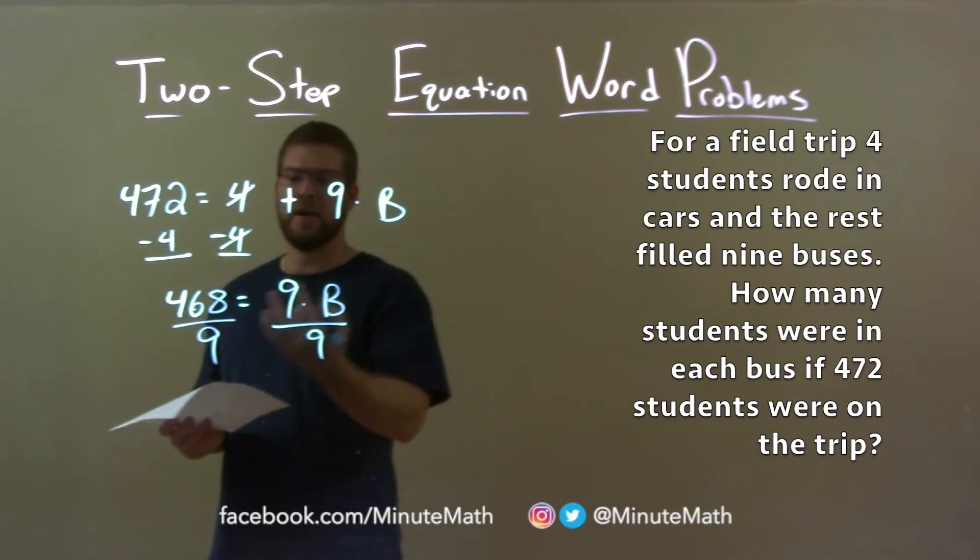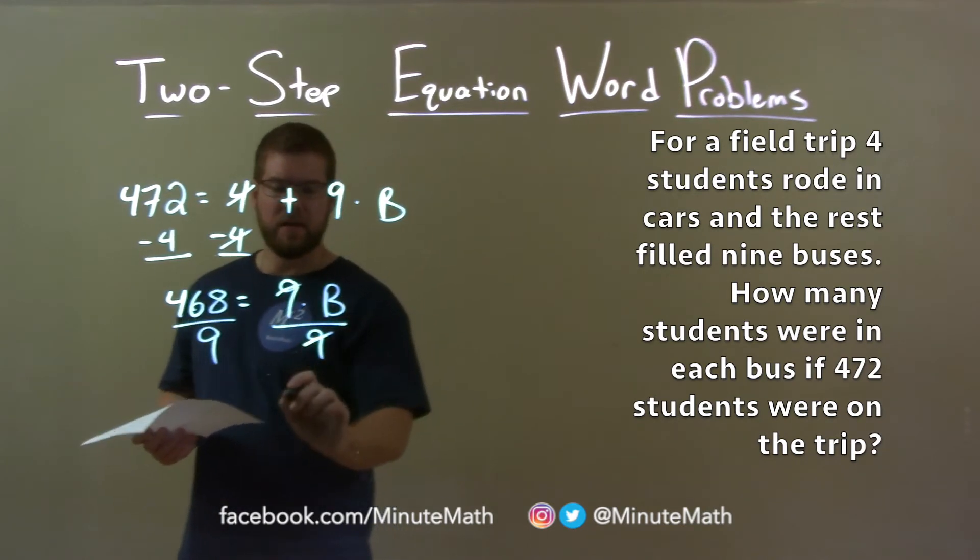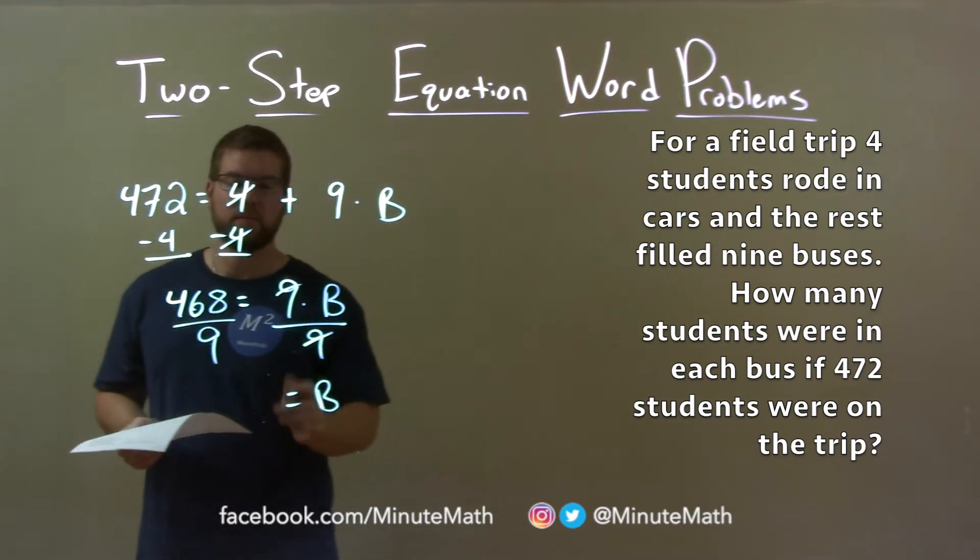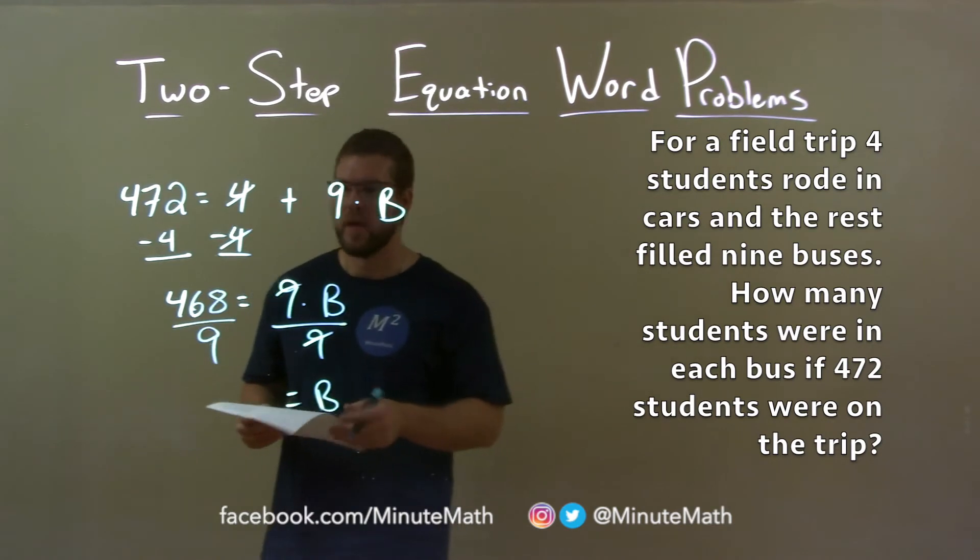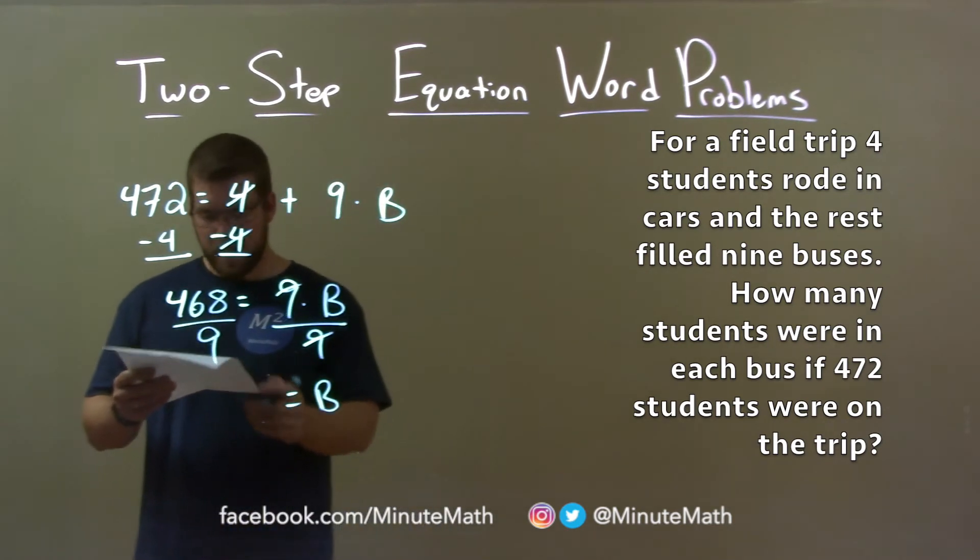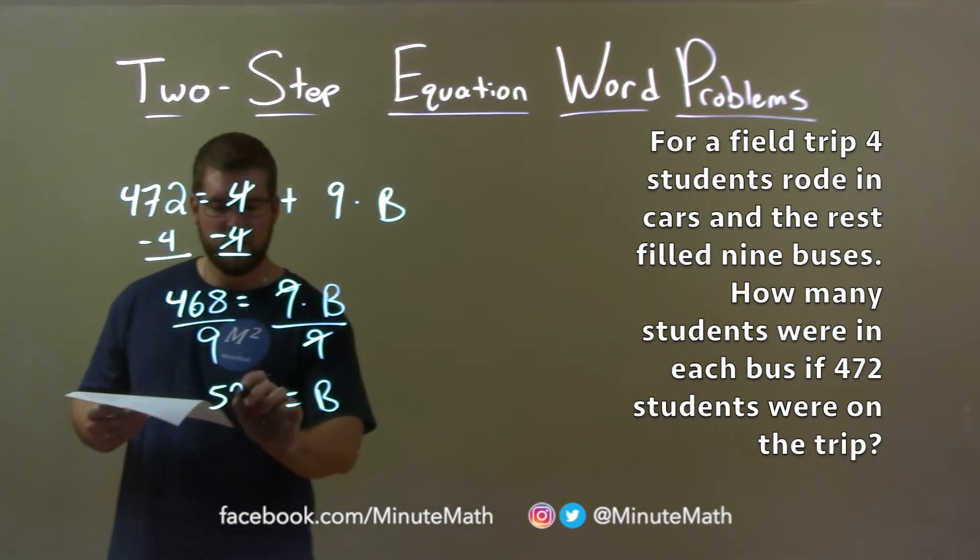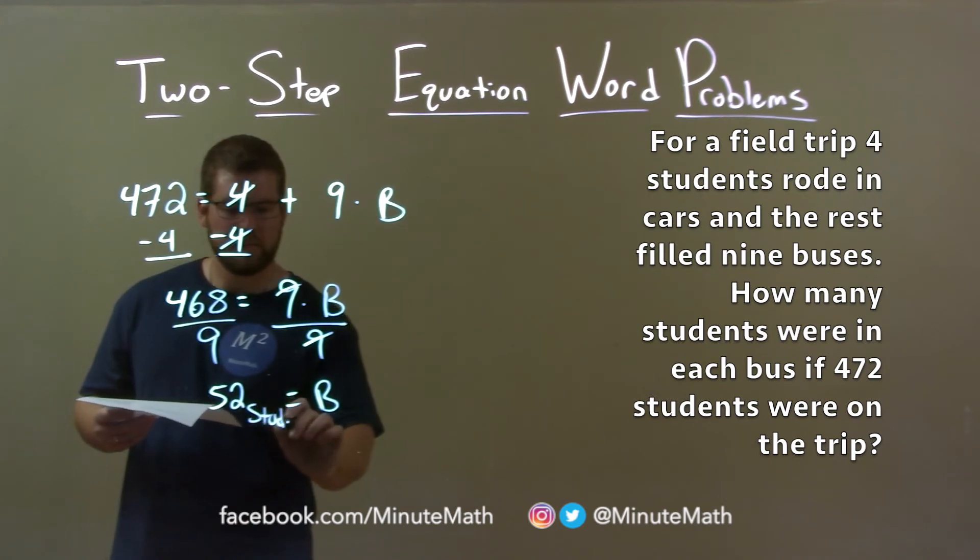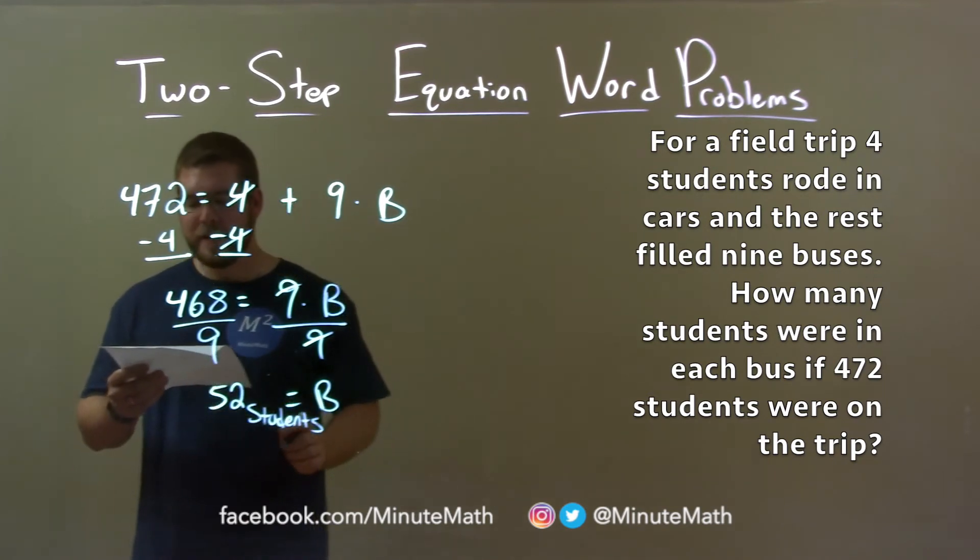There are nine buses, so we divide by nine here and we get B by itself. B is the number of students per bus. 468 divided by nine is 52, so we have 52 students per bus.